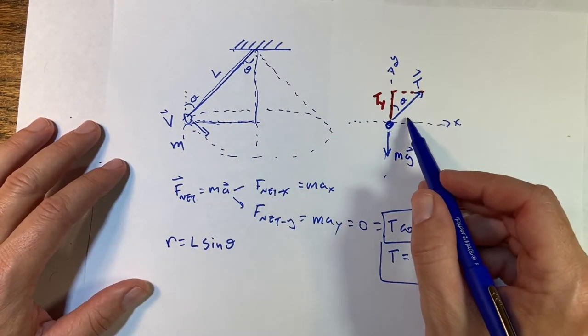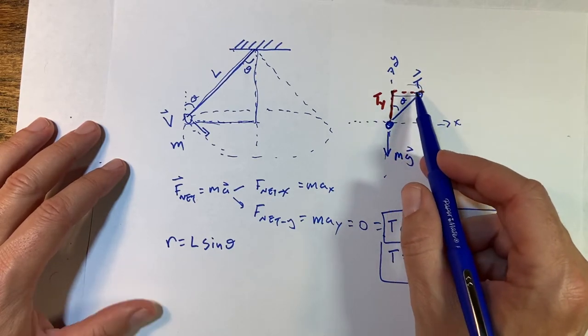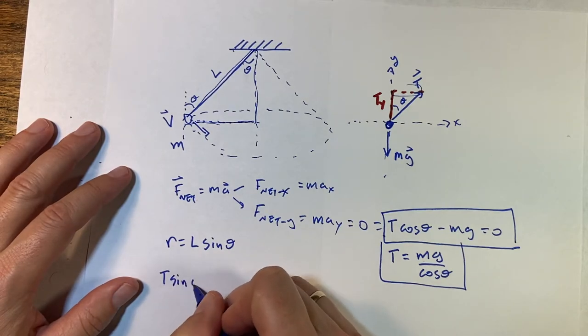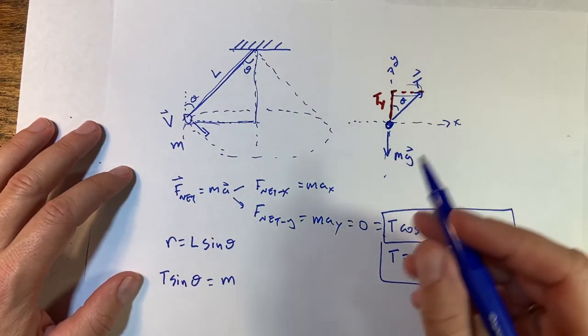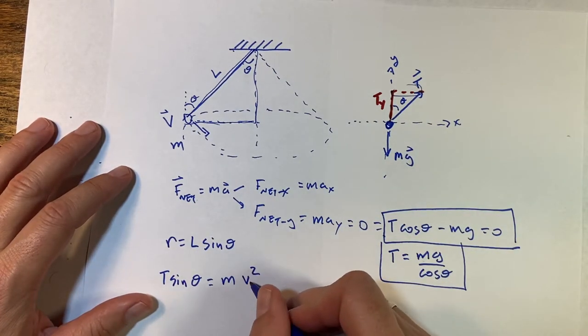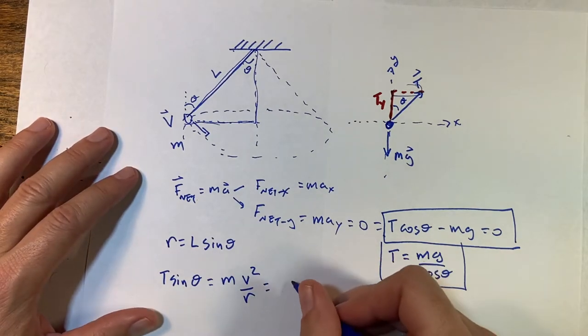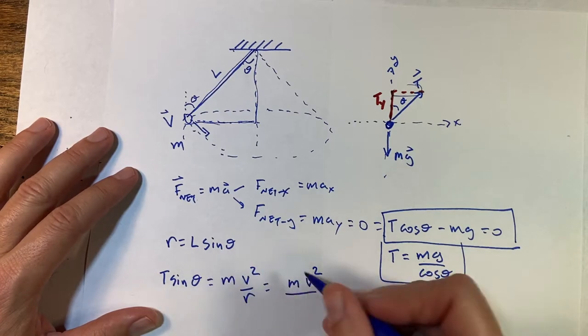Now what forces are acting in the x-direction? It's just this other component of the tension, which is going to be T sine theta. So I get T sine theta equals m times the acceleration, which is going to be v squared over r. And I can write that as m v squared over L sine theta.